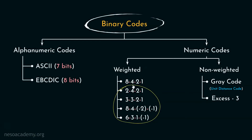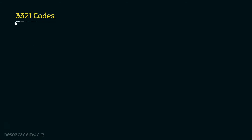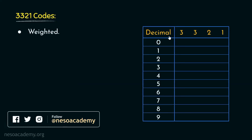Till now we have observed the 8421 codes and the XS3 codes. Now it's time for the self-complementary codes. Instead of learning all of them one by one, we will learn about the logic of self-complementary codes using the weighted code 3321. Now, 3321 codes are weighted. While encoding the decimal symbols 0 to 9, the encodings of 0, 1, and 2 are similar to the encodings of 8421.